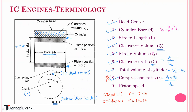The last terminology is piston speed. Piston speed is the average speed of the piston, given as 2LN, in meters per minute, where L is the stroke length and N is the speed of the crankshaft in rpm. If you want it in meters per second, it is 2LN/60.